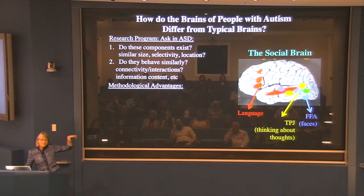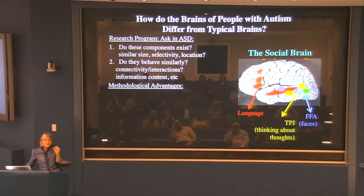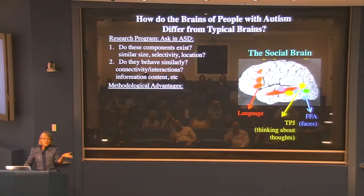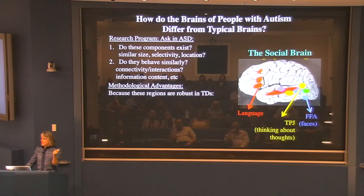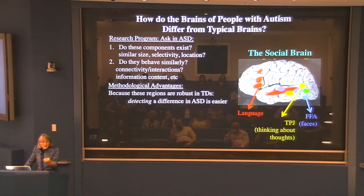The reason this approach seems better than, say, devising a new innovative task that taps into some mental process implicated in autism and then scanning typical subjects and people with autism to look for activation differences — that's a perfectly respectable approach, but this approach has advantages. Each of these regions is extremely robust in typical subjects, giving us a solid foundation. It's easier to detect differences in autism because we know what those regions look like in typical subjects.